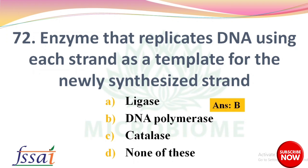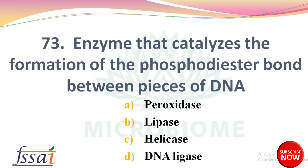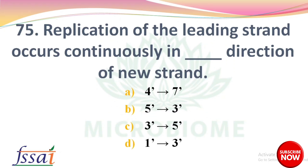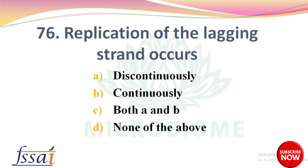The enzyme that catalyzes the formation of phosphodiester bonds between pieces of DNA is called — options: peroxidase, lipase, helicase, DNA ligase. The right answer: option D, DNA ligase. Next: DNA replication is — options: semi-conservative, conservative, spiral, not found. The right answer: option A, semi-conservative. Next: replication of the leading strand occurs continuously in the 5' to 3' direction. Next: replication of the lagging strand occurs — options: discontinuously, continuously, both A and B, none of the above. The right answer: option A, discontinuously.